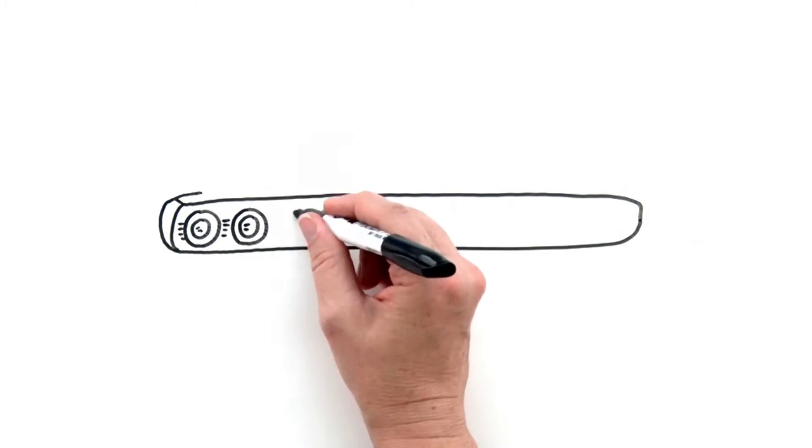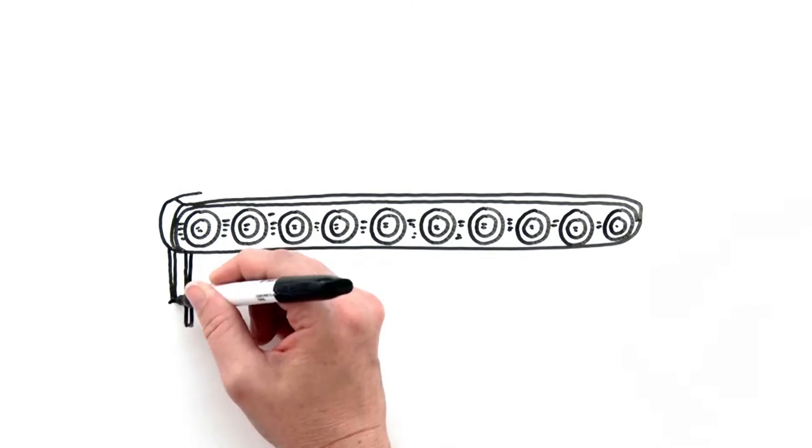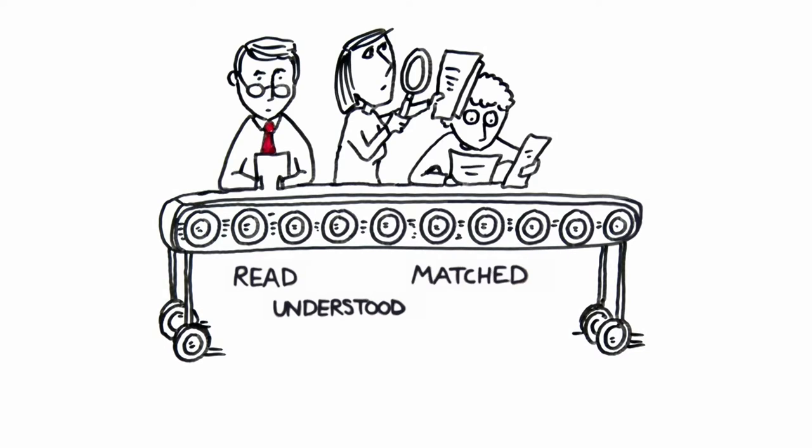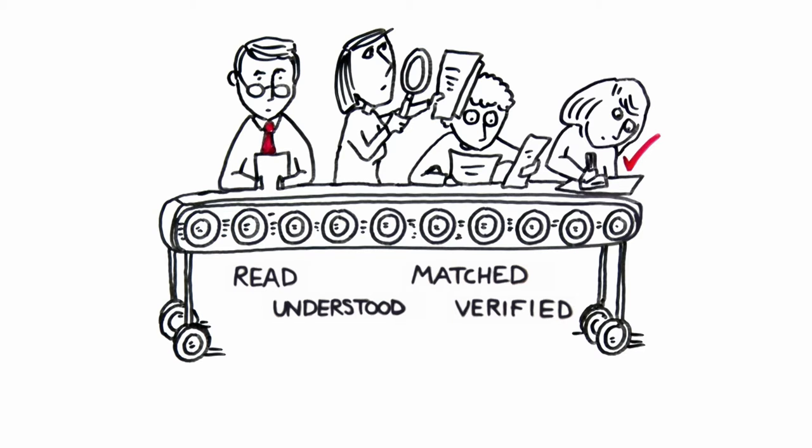Ken started asking his suppliers to email invoices instead of mailing them. And that helped a little. But the invoices still had to be read, understood, matched and verified, which created bottlenecks.